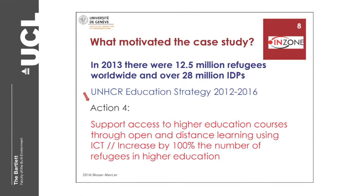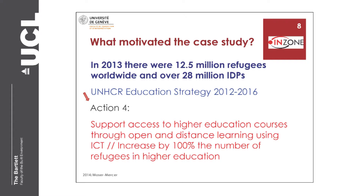In the world at large, there are about 50 million displaced persons — including refugees, internally displaced, and those seeking asylum in third countries. UNHCR, the organization entrusted by international law with taking care of refugees, has now launched an education strategy that includes higher education. Their goal is to get a 100% increase in the number of refugees able to benefit from higher education.